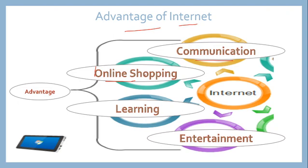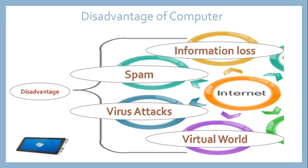After advantages, there are some disadvantages. The first disadvantage is information loss. Information loss means sensitive information on your computer or smartphone can be hacked. There is no exact guarantee for the security of your details. If your password is hacked, your sensitive data can be lost or deleted by another person. So information loss is a disadvantage of the internet.